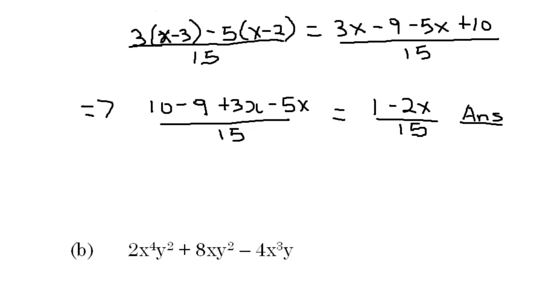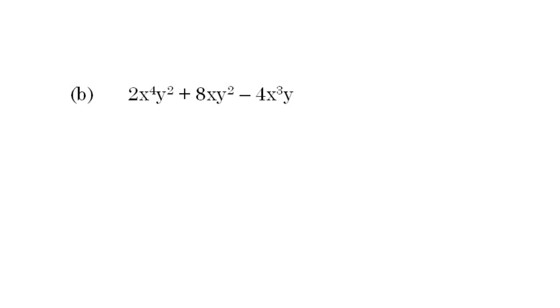Let's look at part 2. Part 2 asks us to simplify this equation. We have 2x to the 4th y squared plus 8xy squared minus 4x cubed y. Now when we're adding or subtracting terms in an equation, we can only add or subtract like terms. And a like term, what makes terms alike is the variables in the terms.